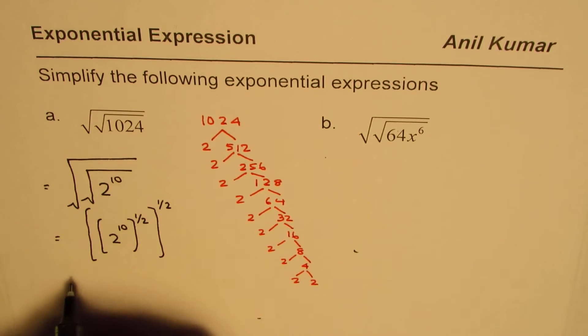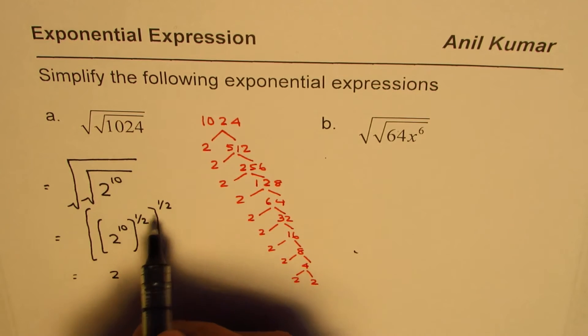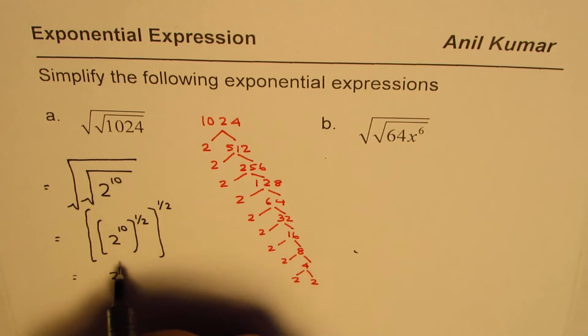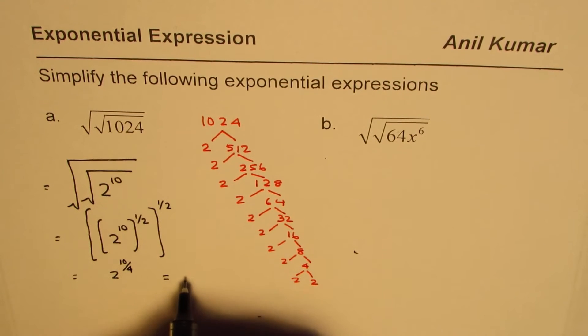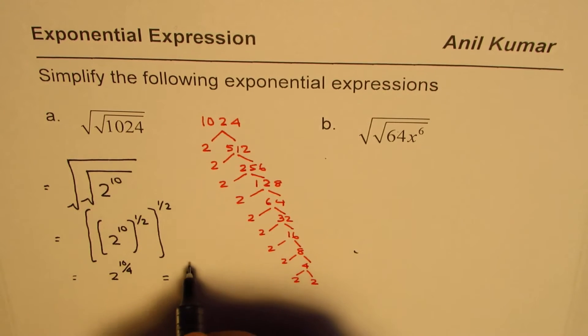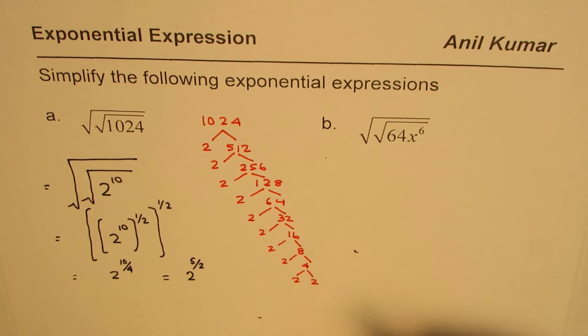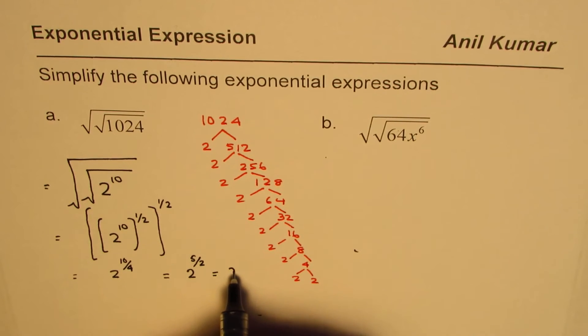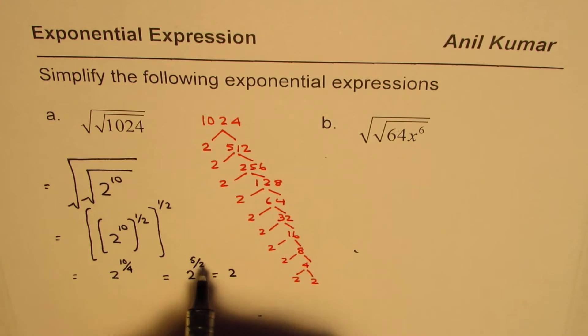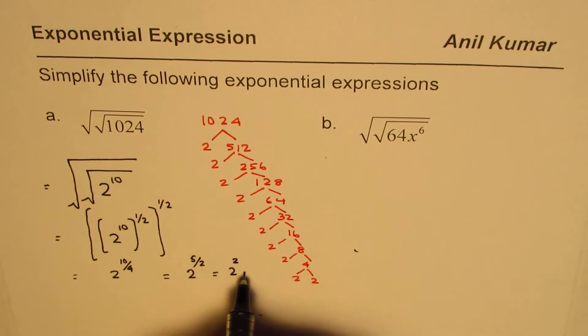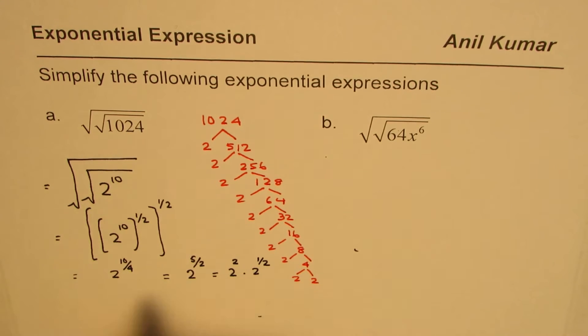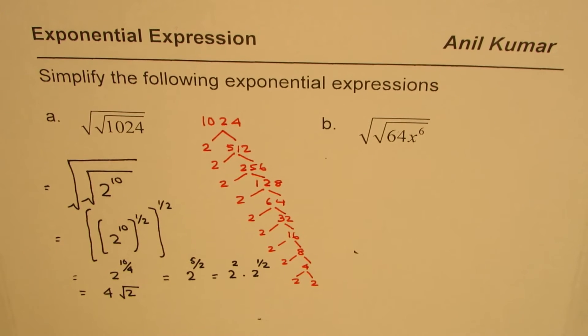So we could write this as 2 to the power of 10 divided by 4. Or you could write this as 2 to the power of 10 divided by 4. You can divide both by 2, so 5 and a half, which is 5 divided by 2. That means 2 whole and 1 square root. That could be written as 2.5, so 2 squared times 2 to the power of half, and that gives you the answer which is 4 square root 2.